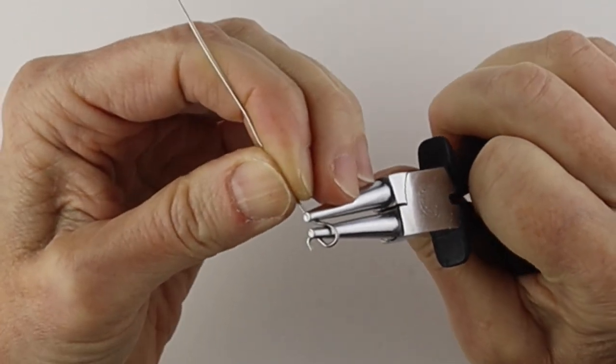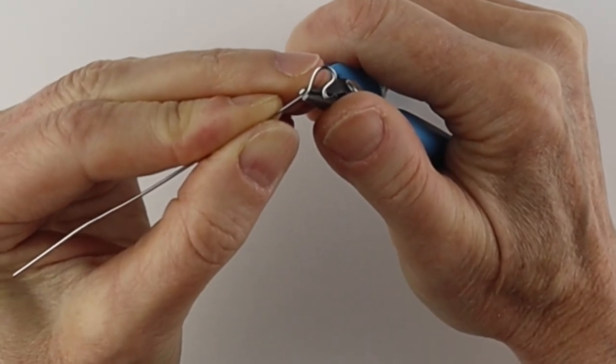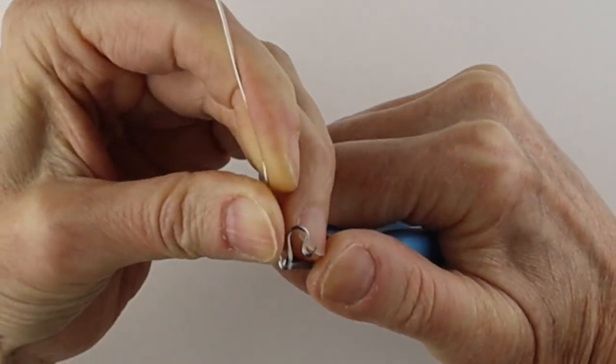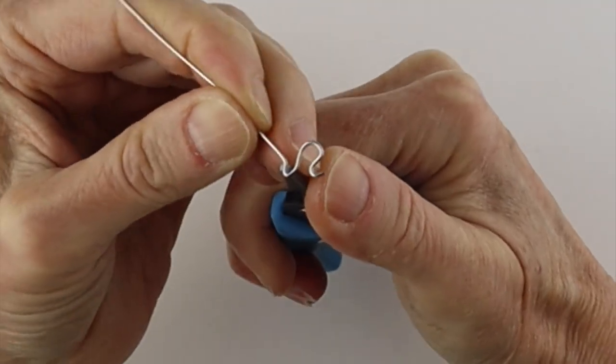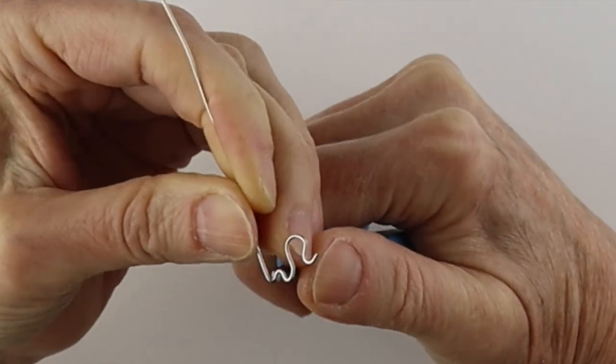And then we're going to bring that one straight up. Then we'll get our tweezer nose pliers and just bend it down, up, and down.